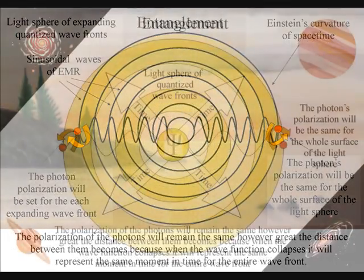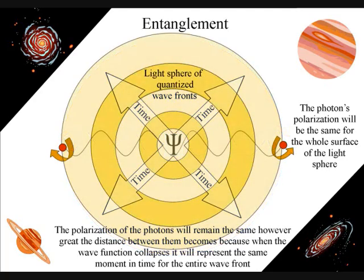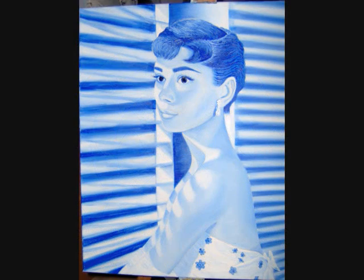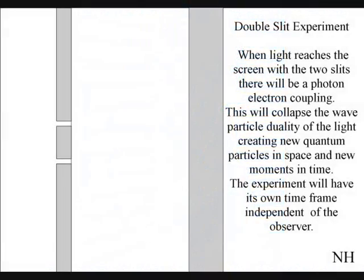Because light is electromagnetic radiation in the visible spectrum, this process is visible to us. In the double slit experiment, we can see light radiate out, striking objects, creating new moments of time.